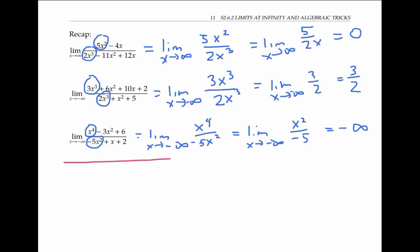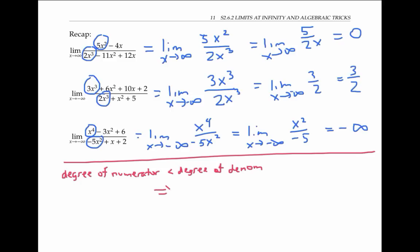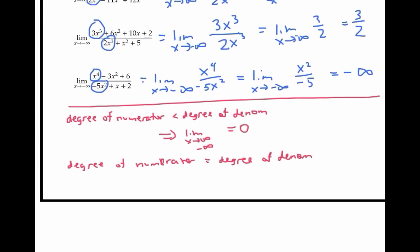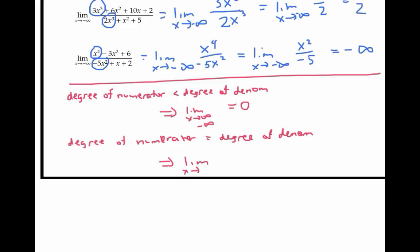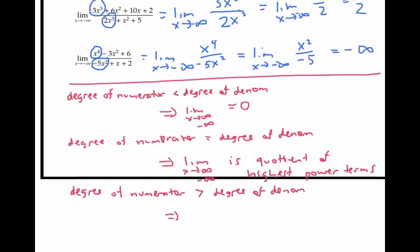For rational functions in general, looking at the highest power terms lets you reliably predict the limits at infinity and negative infinity. When the degree of the numerator is less than the degree of the denominator, then the limit as x goes to infinity or negative infinity is zero, as in example one. When the degree of the numerator equals the degree of the denominator, the limit is just the quotient of the leading terms, which is how we got three halves in the second example. And finally, if the degree of the numerator is greater than the degree of the denominator, then the limit is going to be plus or minus infinity, like it was in the third example.